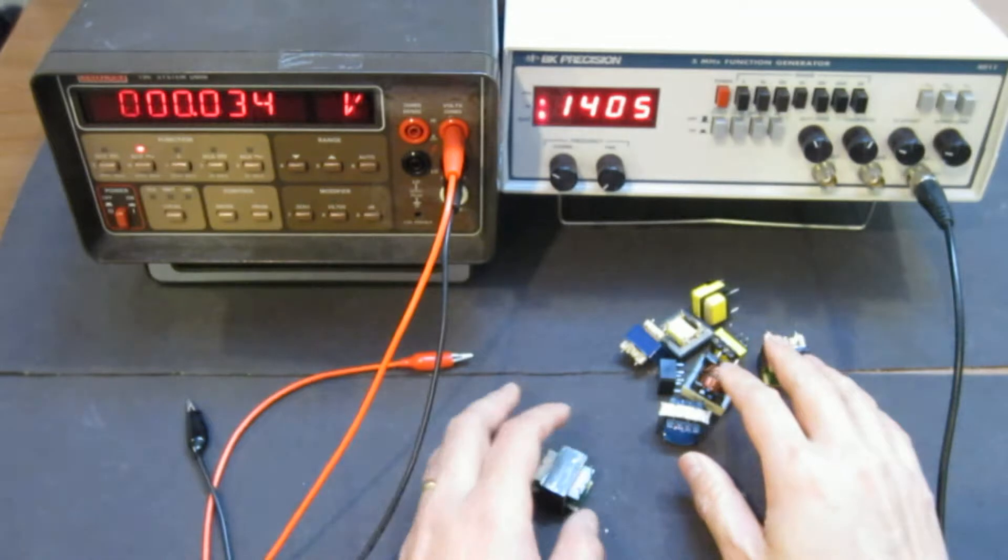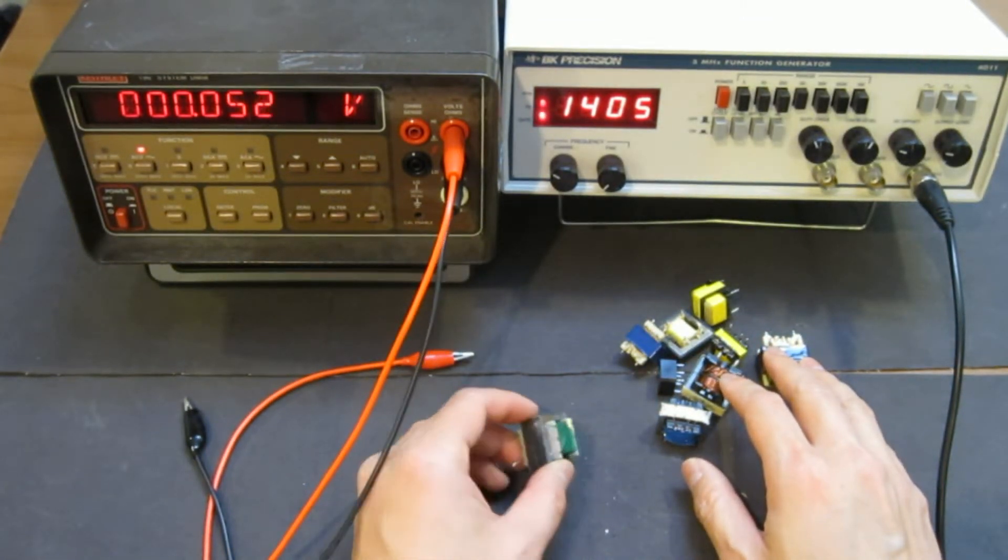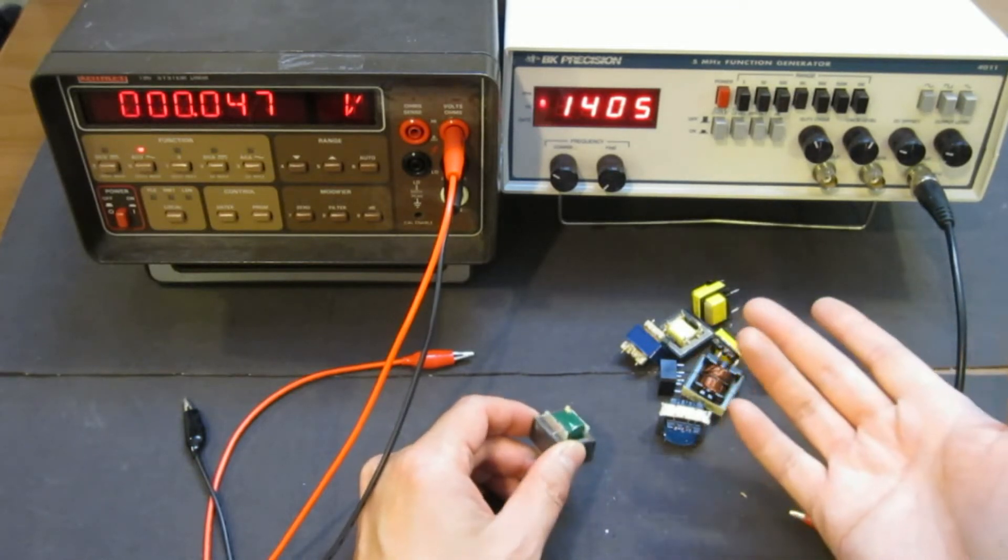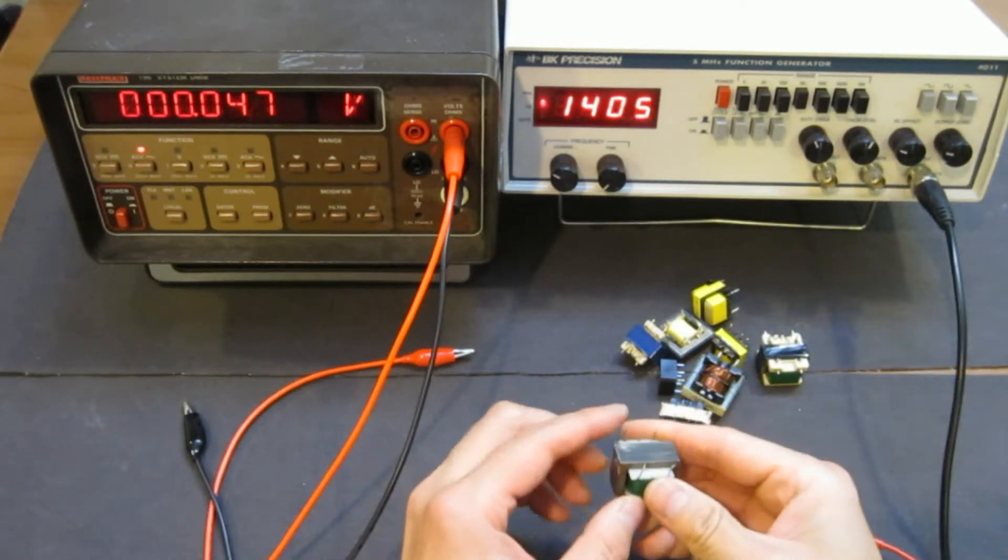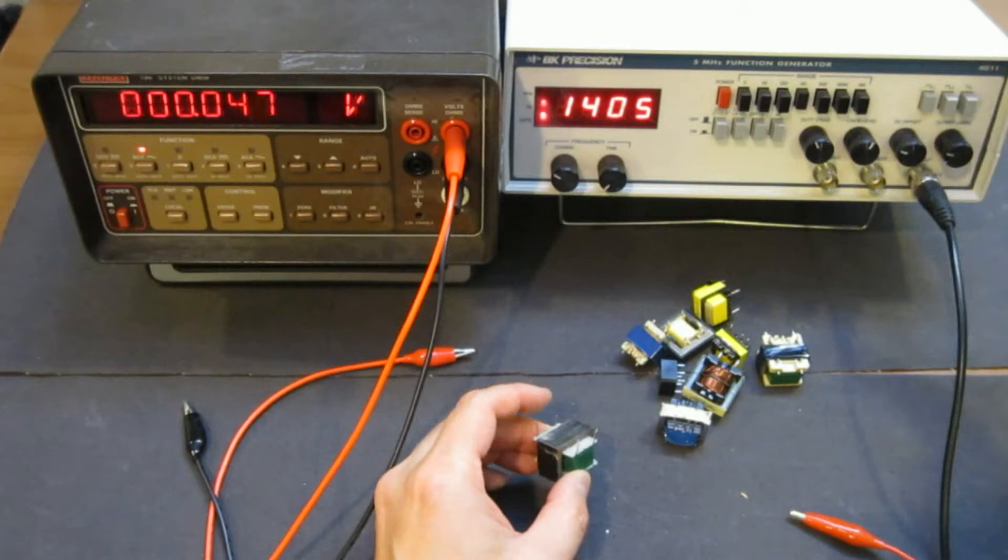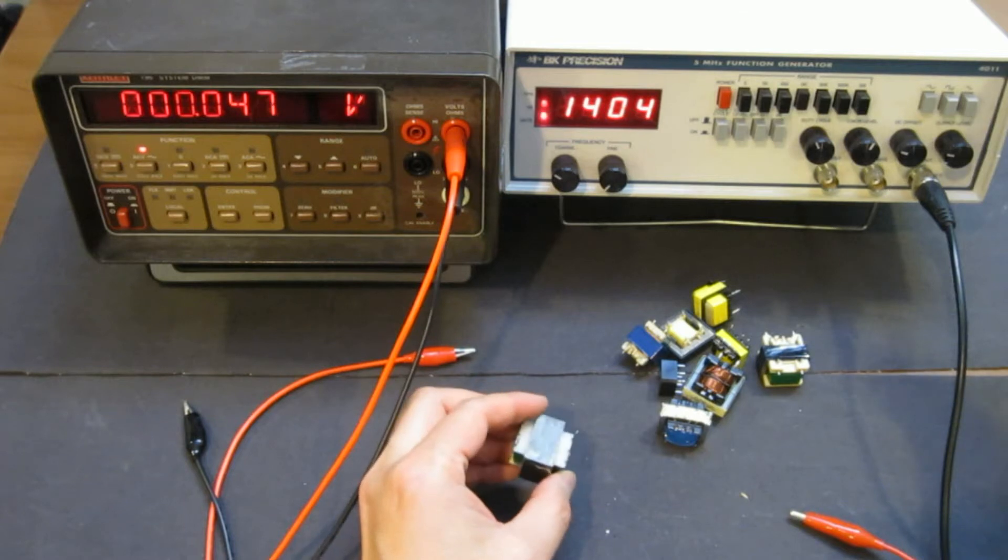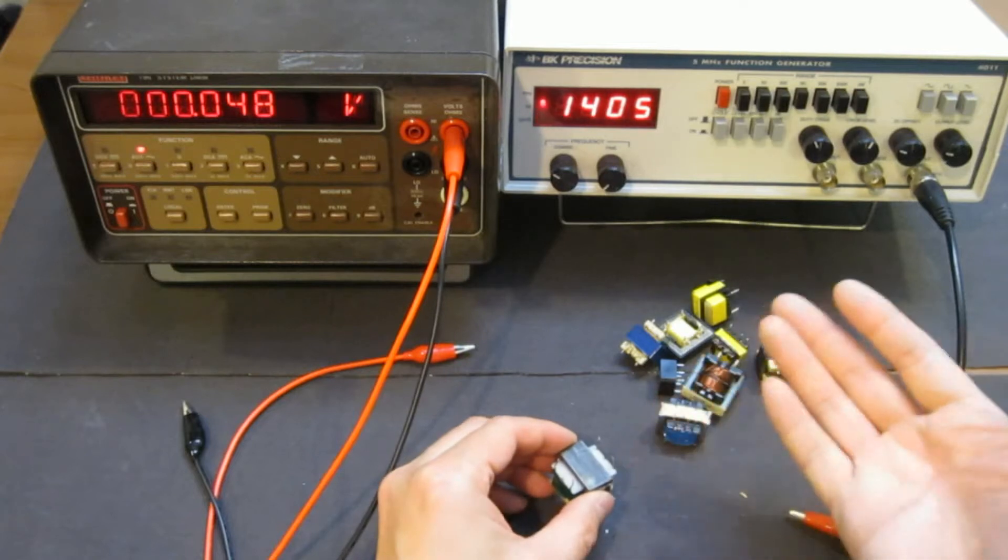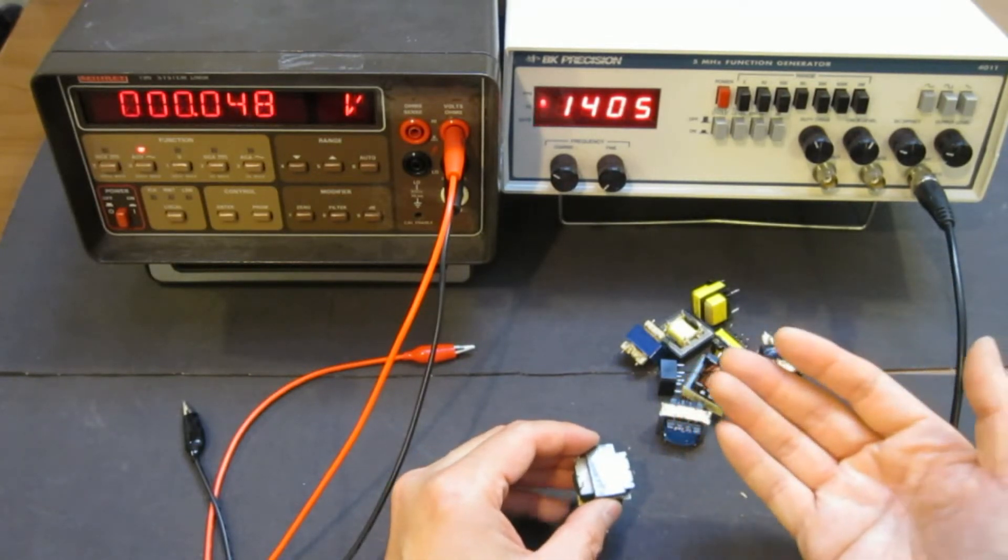On the right-hand side here, I have a BK Precision 4011 5 megahertz function generator. You can pretty much use any function generator as long as it can output frequencies up to tens of kilohertz. That would be more than enough. And the output waveform can be, in our case, this is a sinusoidal, but you can use a square wave if that's the only option you have. And also you can change it to pulse waveforms or whatever the waveform you are driving your transformer with.